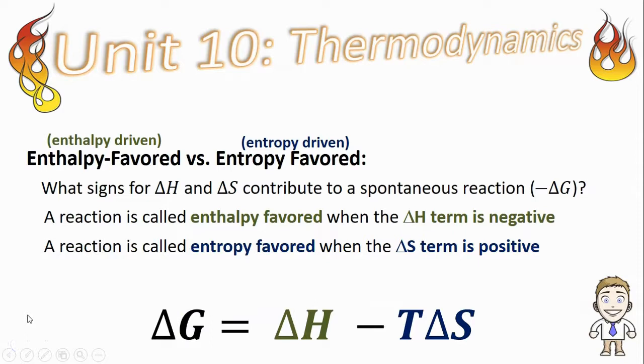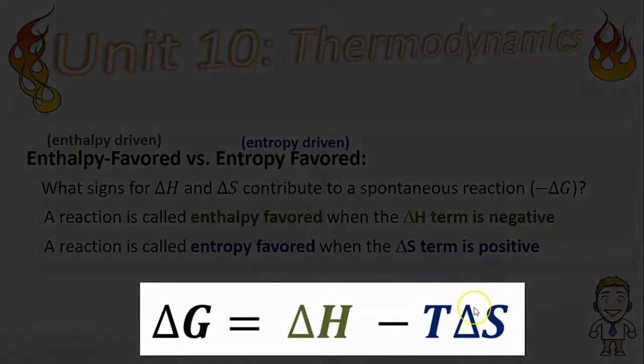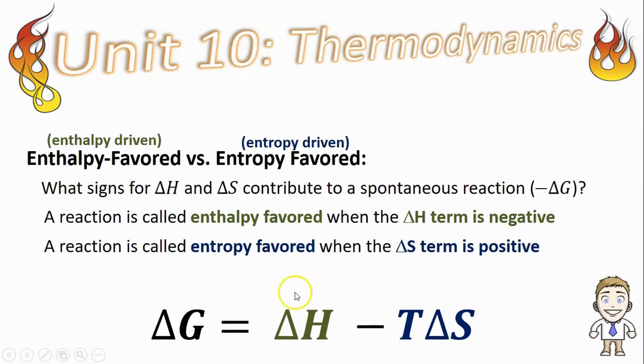At the same time then it should make sense that an entropy favored reaction is going to be one where the delta S term is positive. Well if we have a positive delta S, you are subtracting that positive number also helping delta G to be negative.